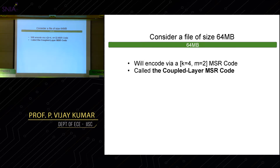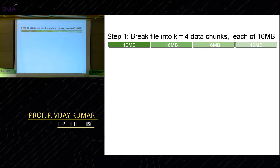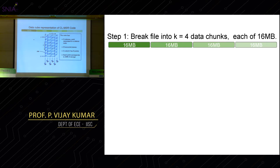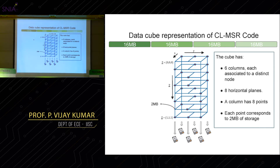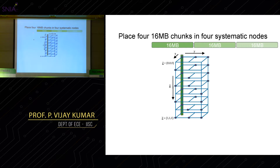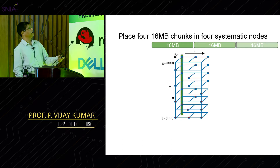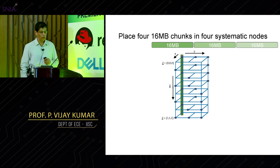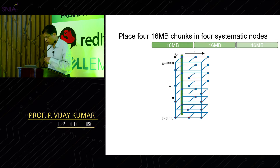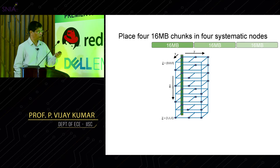This cube has six columns, eight horizontal planes, and each column has eight points. Each point corresponds to 2 MB, so each storage unit holds 16 MB. The first 16 MB is stored in the first node, the second chunk in the second node, and so on for all four data nodes. This is how you encode data and place it into storage.